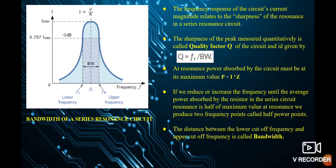In the graph, bandwidth is represented as the distance between the two frequencies FL and FH, where they intersect at the two half power point frequencies. The value I equals V by R is represented as I max, and the bandwidth starts at minus 3 dB — that is 70% of the maximum current, at 0.707 I max. The Y-axis represents current and the X-axis represents frequency. The mid value of the bandwidth is actually the resonant frequency, and bandwidth is obtained by using the two cutoff frequency values.